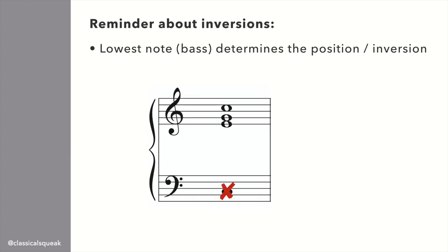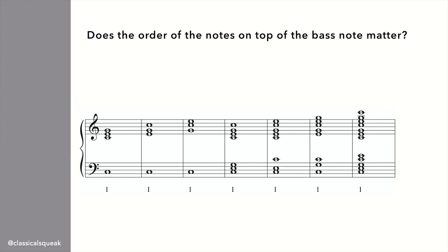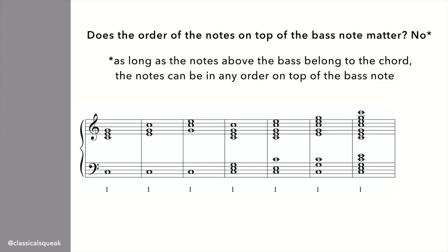If I ignore the left hand and look at just the right hand, it's in first inversion. It's three notes we saw before with E on the bottom, so it's first inversion. However, we just learned that the lowest note played from the chord, the full stack, determines what inversion you are in. So I have to look at the left hand. The lowest note here is C, which means that this is actually in root position. Does the order of the notes on top of the bass note matter? No. As long as the notes of that chord are present, it can be in any order on top of the bass note.